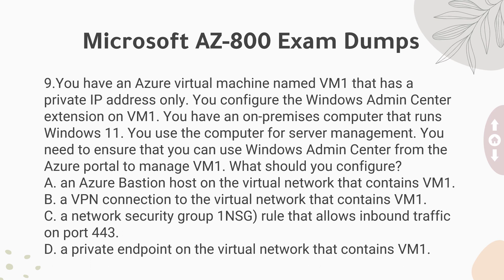Question 9: You have an Azure Virtual Machine named VM1 that has a private IP address only. You configure the Windows Admin Center extension on VM1. You have an on-premises computer that runs Windows 11 and use it for server management. You need to ensure that you can use Windows Admin Center from the Azure portal to manage VM1. What should you configure? A. An Azure Bastion host on the virtual network that contains VM1. B. A VPN connection to the virtual network that contains VM1. C. A Network Security Group (NSG) rule that allows inbound traffic on port 443. D. A private endpoint on the virtual network that contains VM1.